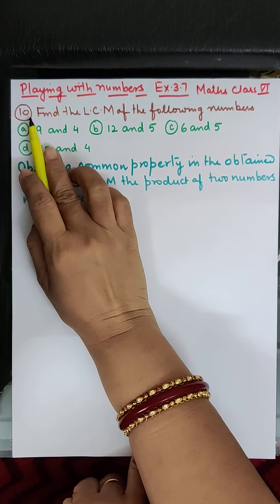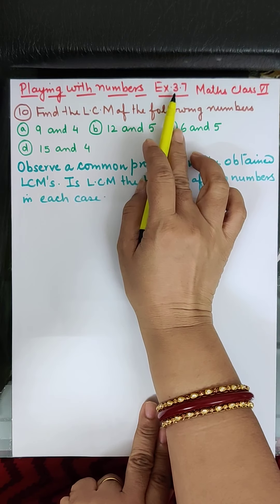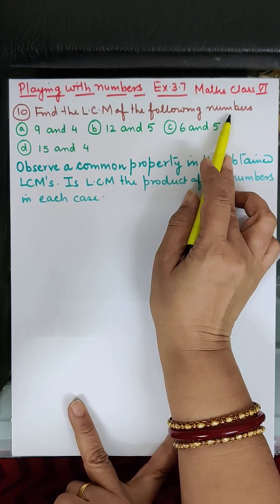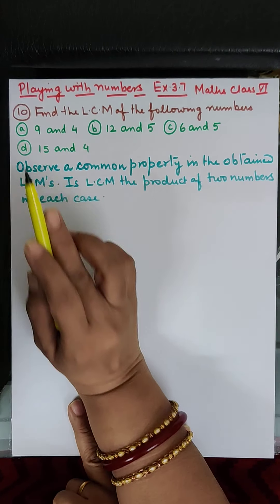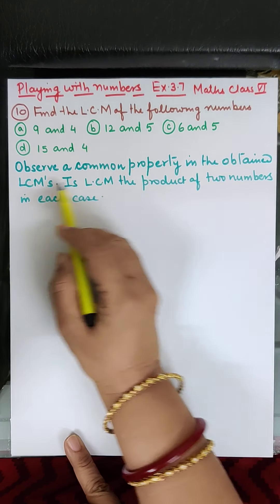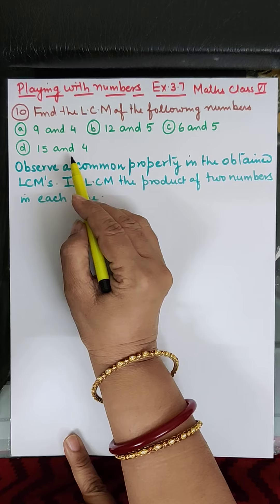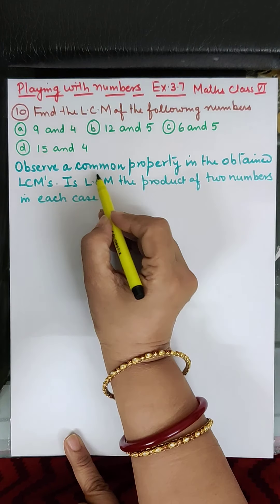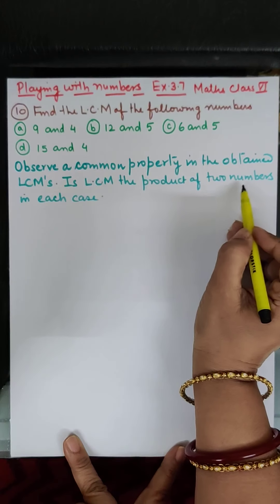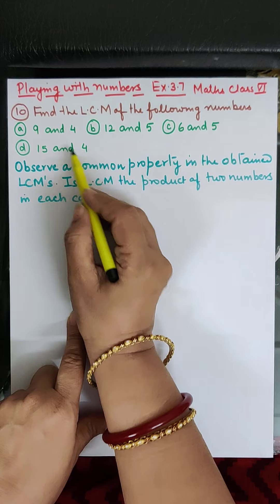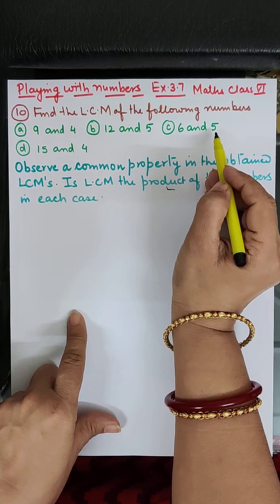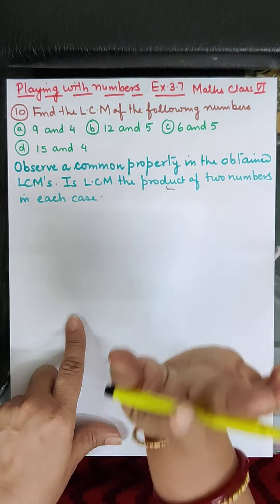Children, in today's class we shall start with question number 10 from exercise 3.7. The topic is playing with numbers. The question says: find the LCM of the following numbers — parts A, B, C, and D. After finding the LCM, we have to observe a common property. We will check whether the LCM of two numbers is equal to the product of those two numbers. Let us begin.